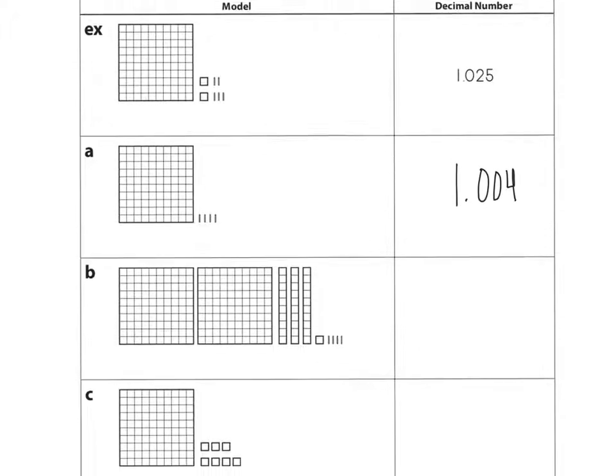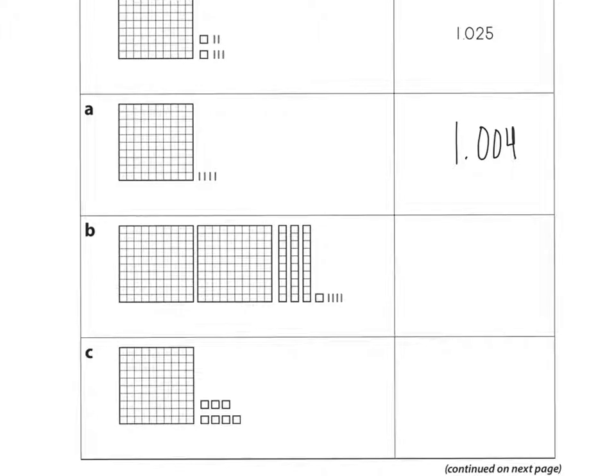Let's look at B. How many wholes do I have? Two wholes, three tenths, one hundredth, four thousandths. So how do I write that as a decimal? Two wholes, three tenths, one hundredth, four thousandths. I read this as a decimal as two and three hundred fourteen thousandths.